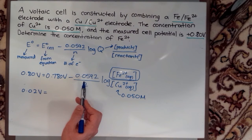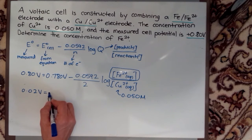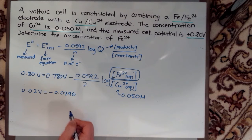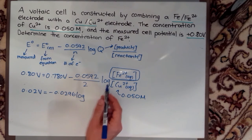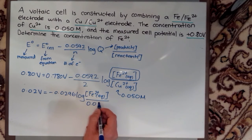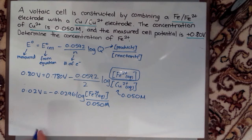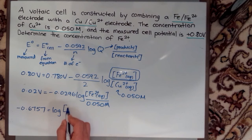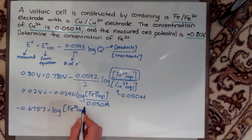Let's get going on that. Let's start rearranging. We have 0.02 volts equals my division of this, which is going to give me negative 0.0296 times the log of my Fe2+ over my concentration that was given. If I keep rearranging that I eventually get to negative 0.6757. I'm just dividing out by this term here.